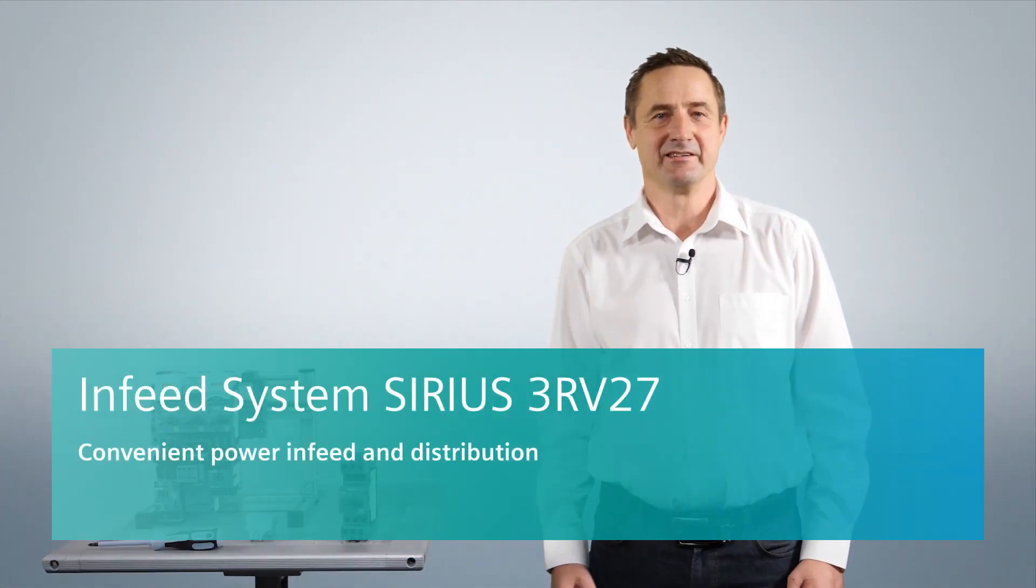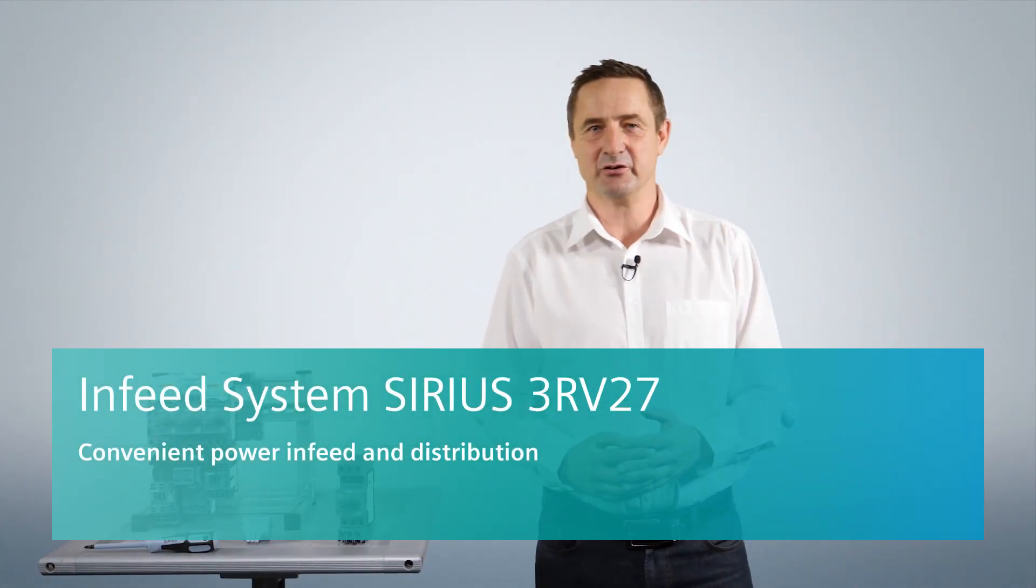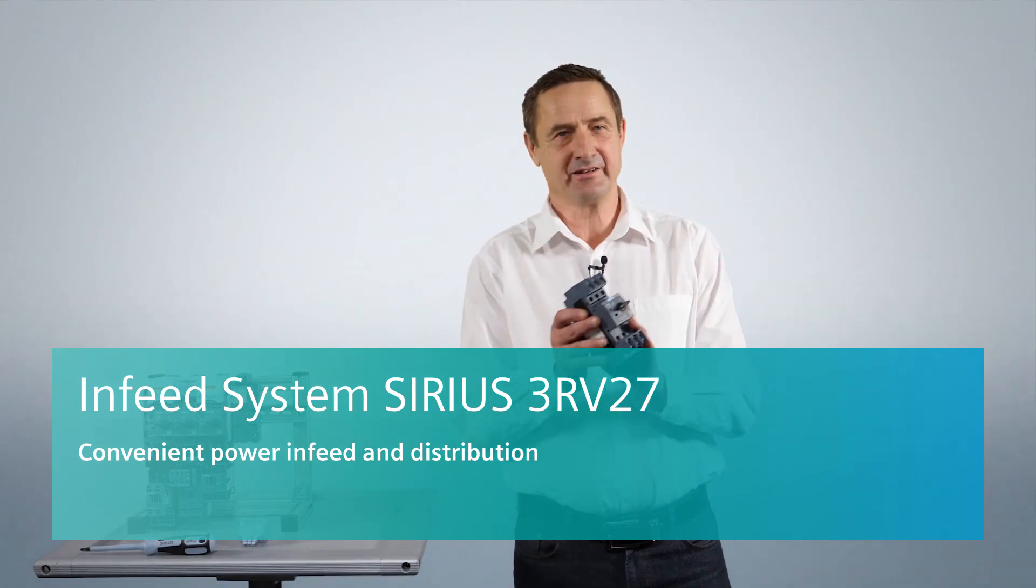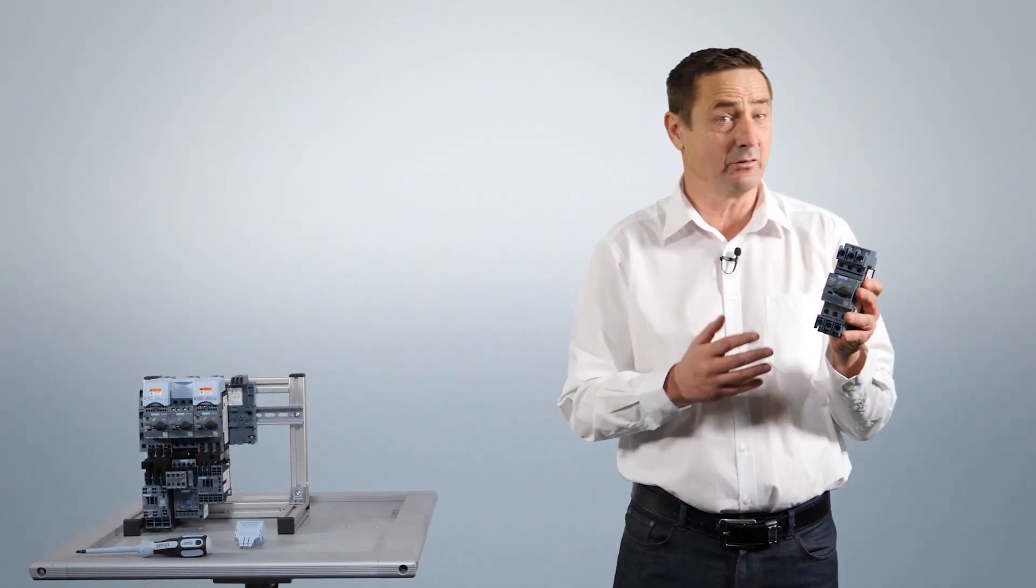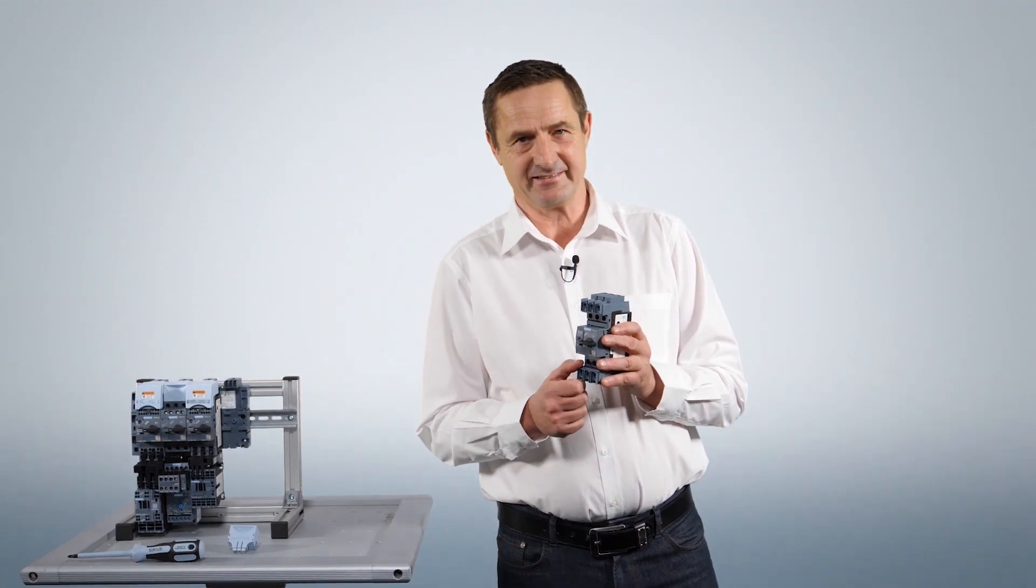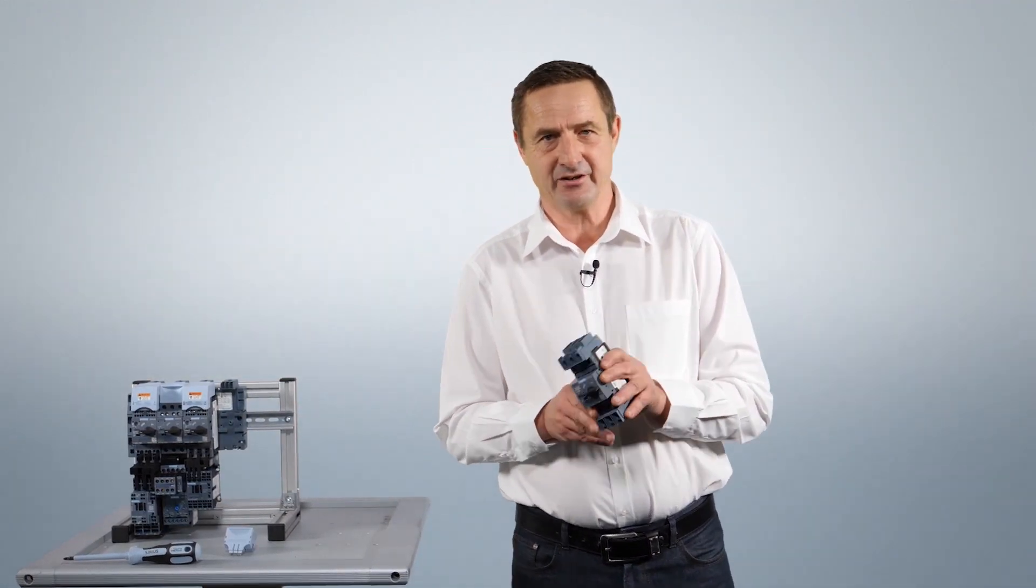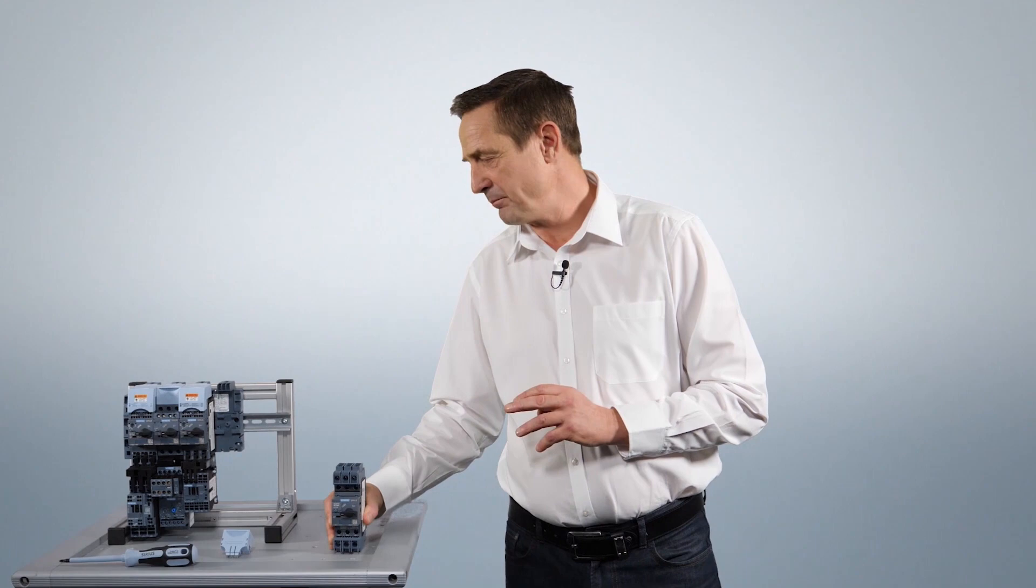My name is Maximilian Krehan and today I would like to show you how to insert a circuit breaker 3RV27 or 28 in the frame sizes S0 and S00 for motor and non-motor loads in the compact infeed system 3RV29 for international markets.